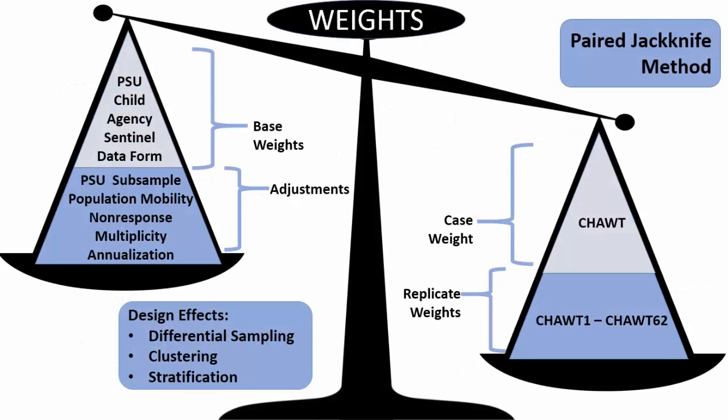The weights in NIS-4 are designed to provide national estimates of the incidence of child abuse and neglect. With the complex sample design, children were selected for the study with unequal probability. There are design effects due to differential sampling, clustering, and stratification. The base weight for each sample unit is the reciprocal of the probability for including that unit in the sample. Base weights were developed for the child data form, sentinel, agency, and PSU. Sample weights were then developed to adjust for PSU subsample selection probabilities, population mobility due to natural disasters, non-response, multiplicity through multiple reports or sources, and annualization.